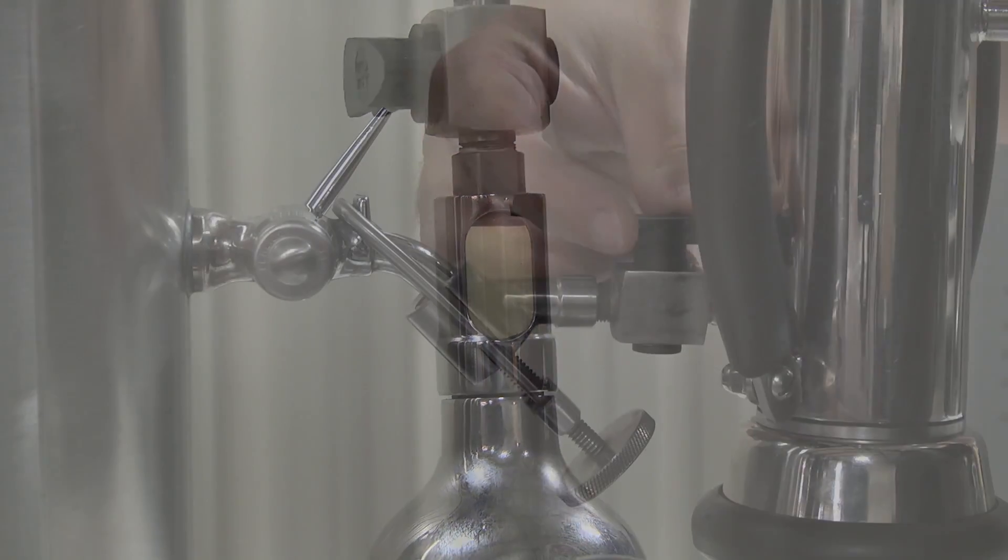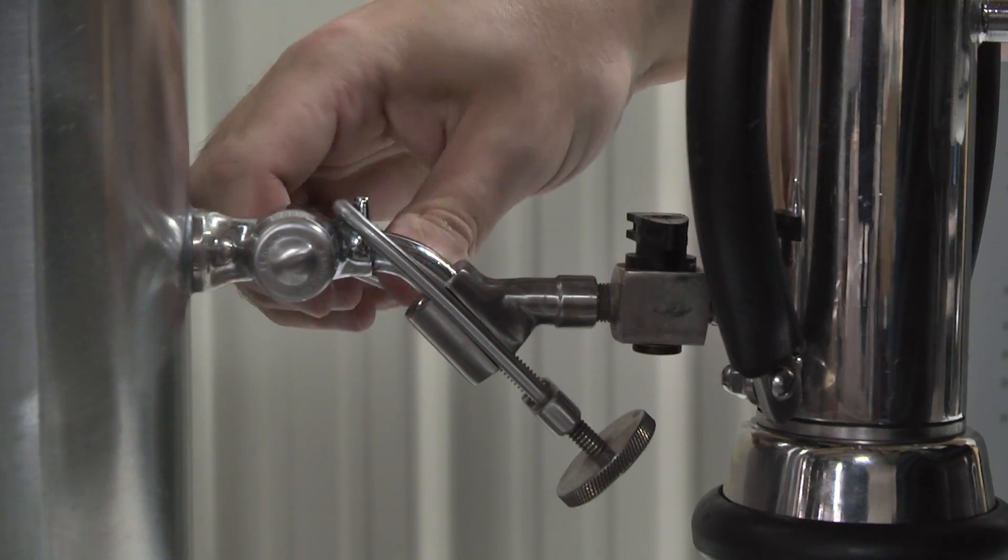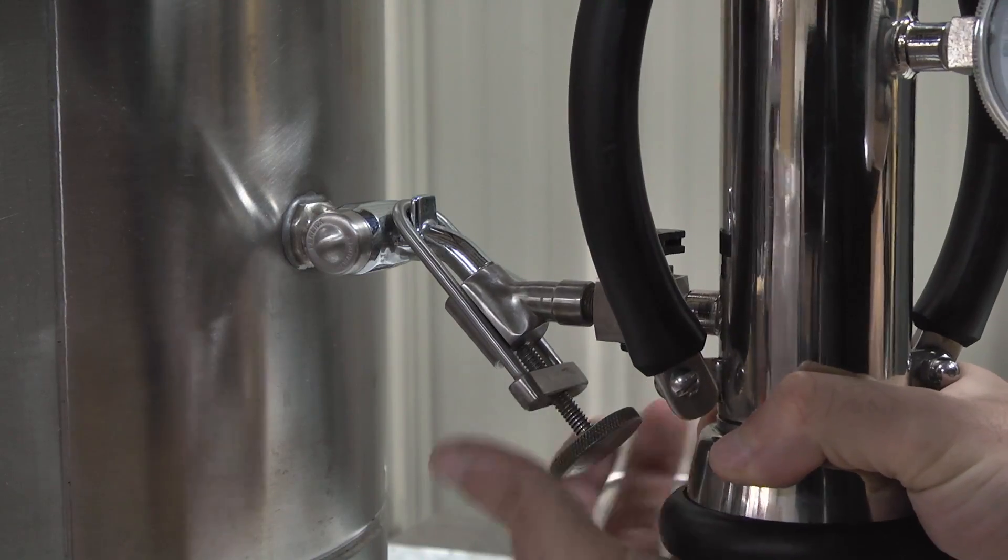Close the inlet valve, vent valve, and the tricock. Remove the volume meter from the tricock on the tank.